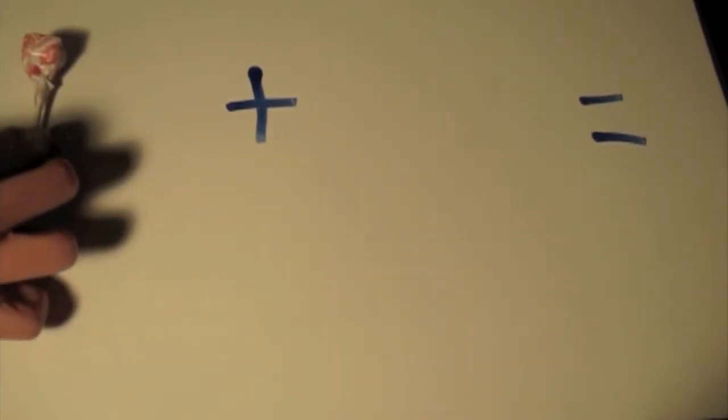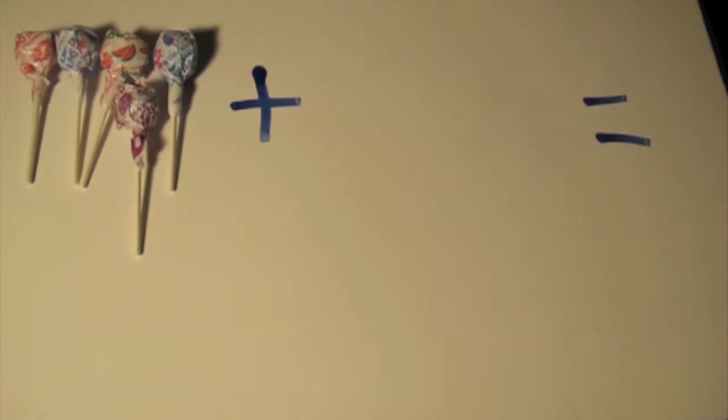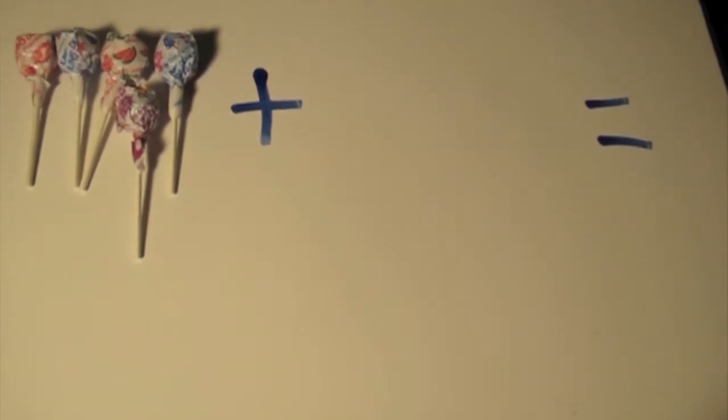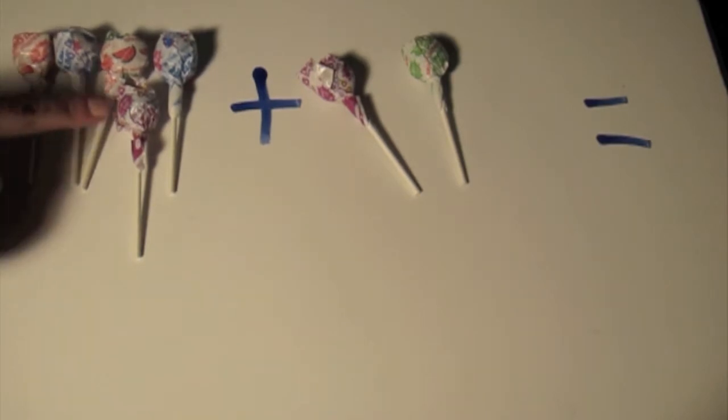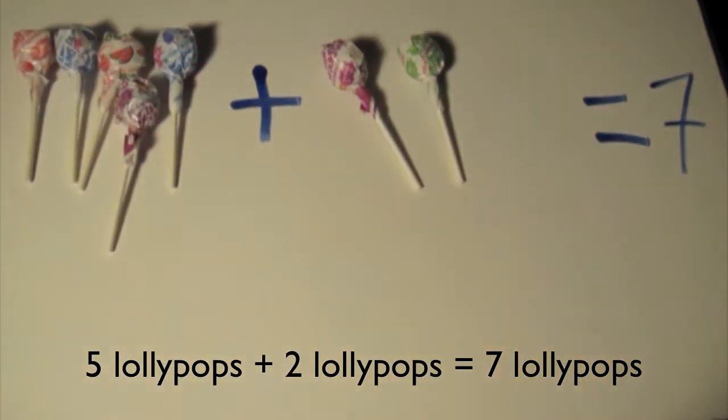Here's a demonstration of the word problem. Pam has one, two, three, four, five lollipops. And Ken has two — one, two. In total, they have one, two, three, four, five, six, seven. Seven lollipops.